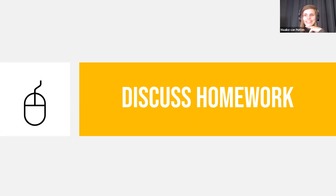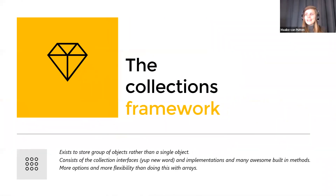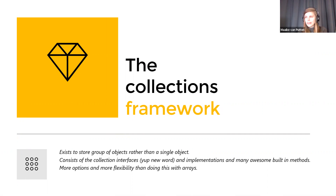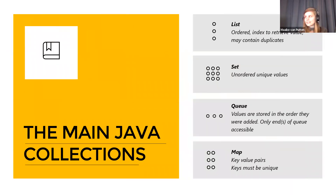Last week we discussed the collections framework - it exists to store groups of objects rather than single objects, much like arrays but with lots of extra benefits. We'll see those today through the methods the collection framework comes with. The framework has four main groups: lists, sets, queues, and maps - and what I didn't tell you is that these are all interfaces.